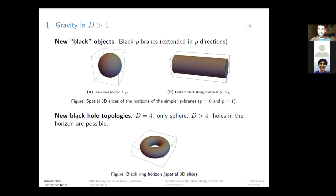Another new feature is that we have new topologies for black holes. In four dimensions black holes are always spheres—they can be squished if rotating, but they never have a hole. But in more than four spacetime dimensions there can be holes in the horizons, as in a black ring. An intuition for how this arises is to take a uniform black string, wrap it around, and make it spin so it doesn't collapse under its own gravity—giving an intuition of how black rings can appear in higher dimensions.